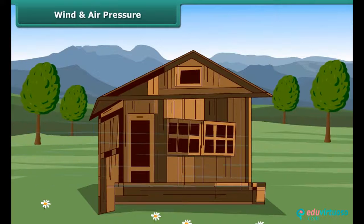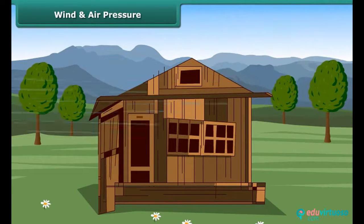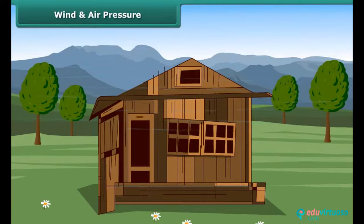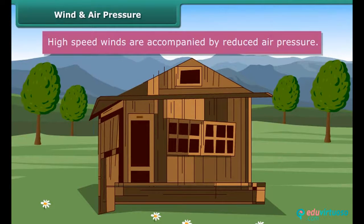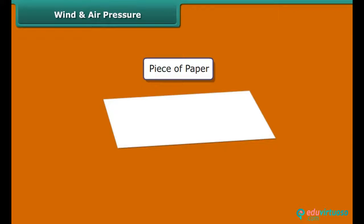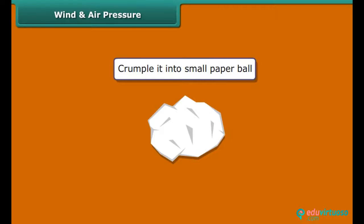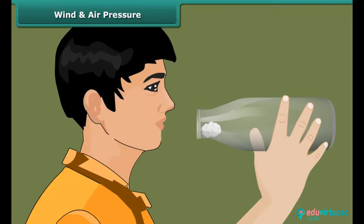High-speed winds can blow away weak roofs of buildings because high-speed winds are accompanied by reduced air pressure. In another activity: take a piece of paper, crumple it into a small ball, hold an empty glass bottle, and place the paper ball just inside its mouth. Try to blow the ball to force it into the bottle. Observe carefully — the paper ball does not move inside the bottle.